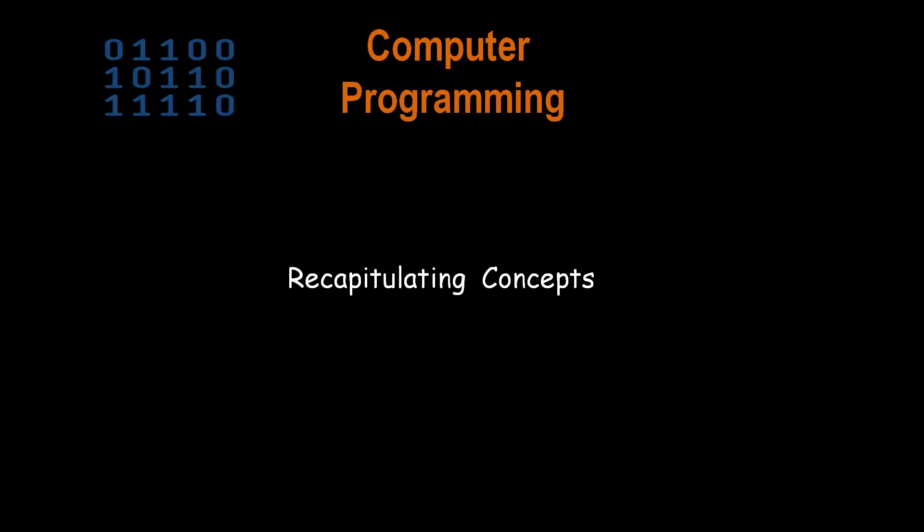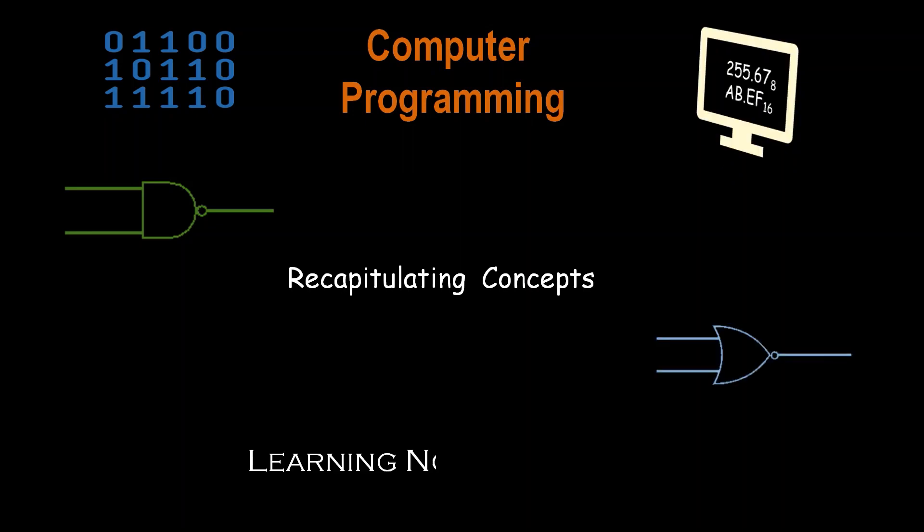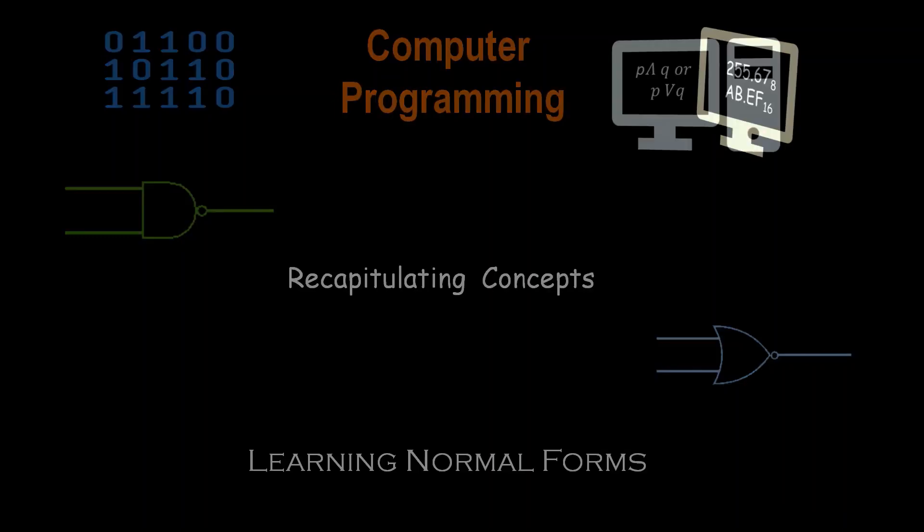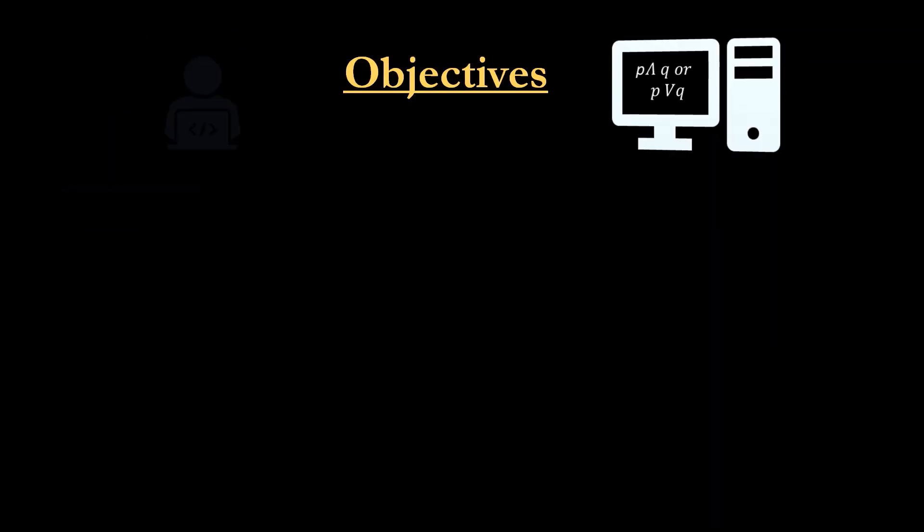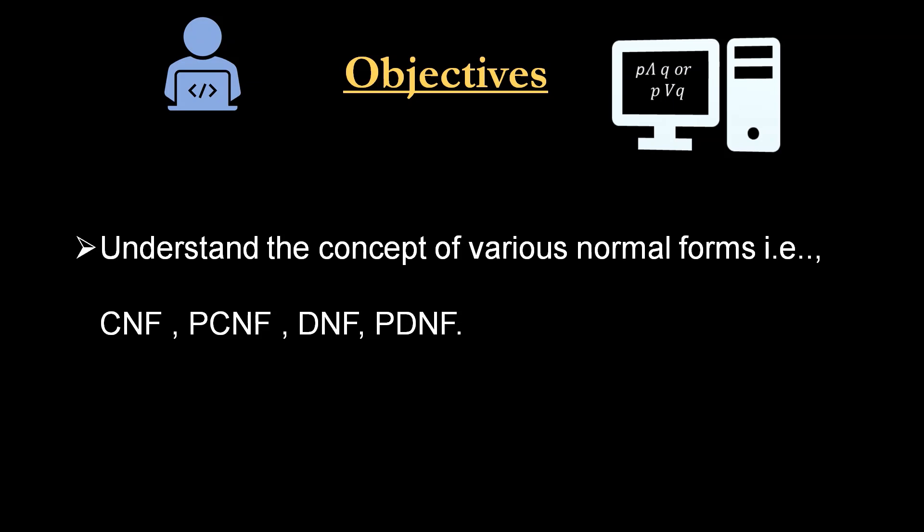Hello everyone, welcome to the course Computer Programming. Today we are going to see learning normal forms. We have studied in the last lecture that normal forms are... What is normal forms? So objective: what is our lecture? Understand the concept of various normal forms, that is CNF, PCNF, DNF, and PDNF. These short forms now we have to see them.